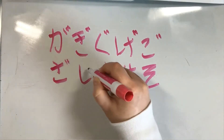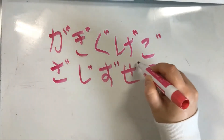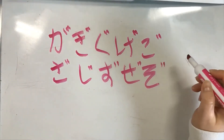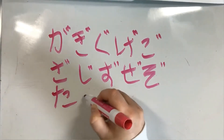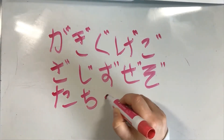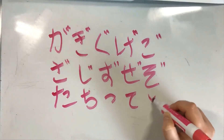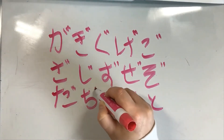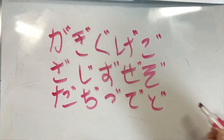Continuing the hiragana review: sa, ji, zu, ze, zo. And when we did ta, chi, tsu, te, to, it became da, ji, zu, de, do.